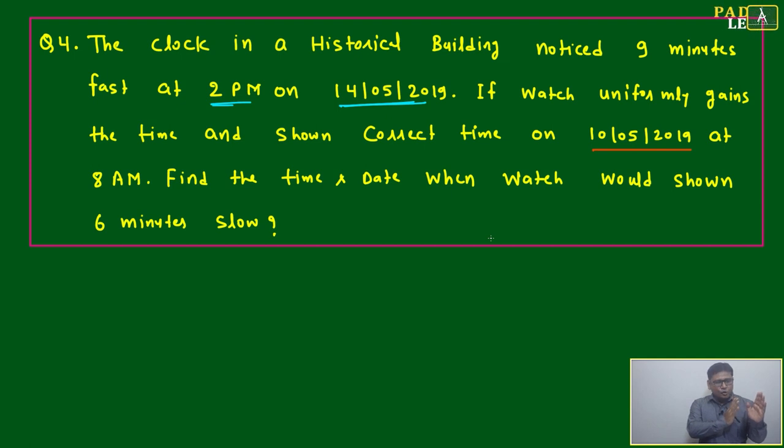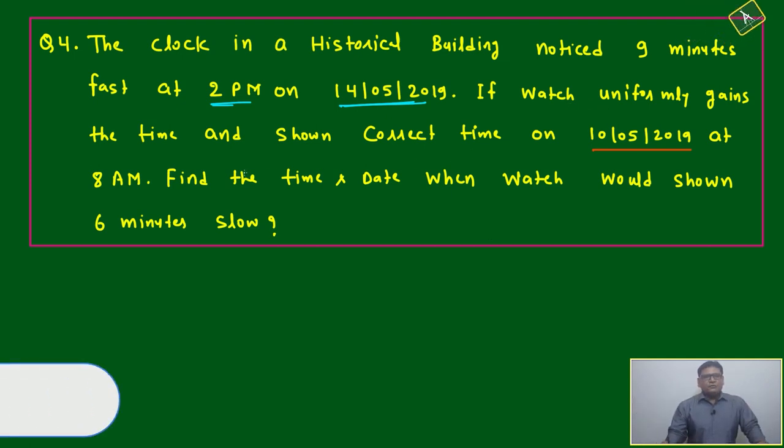In between, one exact time will come when watch will show the correct time. In last question we discussed two extremes given, in between we have to find. Now I change the situation - one extreme and middle point are given, we have to find another extreme.